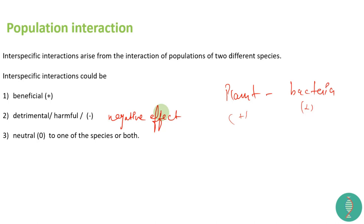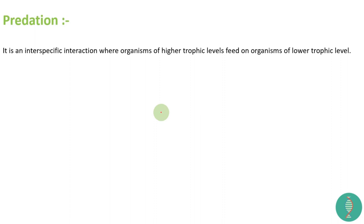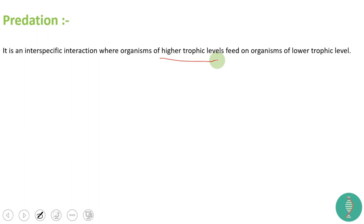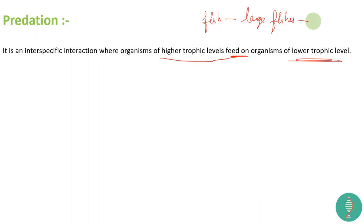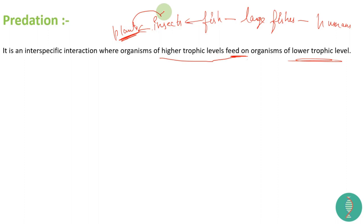Any species can show beneficial, harmful, or neutral interactions. First is predation. In predation, the more powerful organism preys on the weaker one. It is an inter-specific interaction where organisms of a higher trophic level feed on organisms of a lower trophic level. For example, larger fishes feed on smaller ones, fishes feed on insects, insects feed on plants.